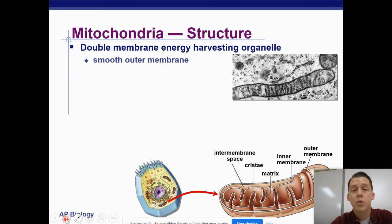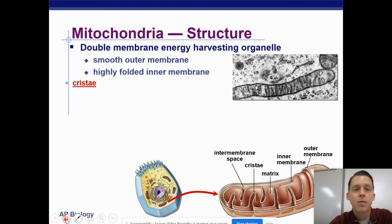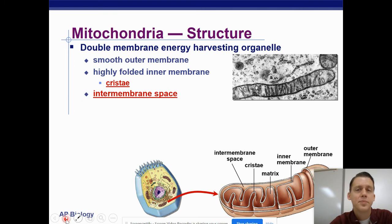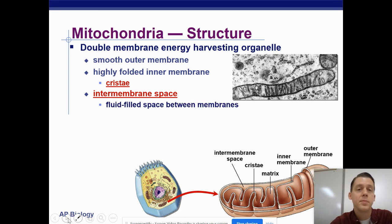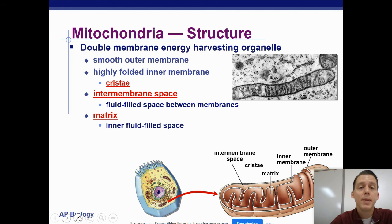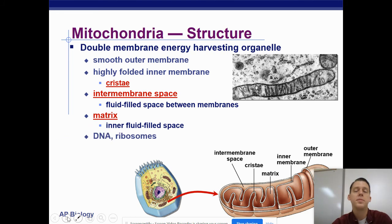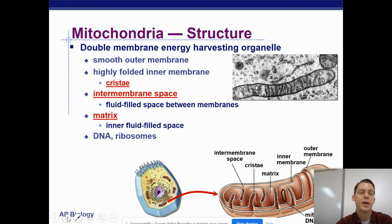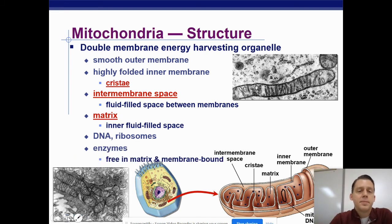The mitochondria has a double membrane. The outer membrane is very smooth and the inner membrane is highly folded, sometimes referred to as the cristae. There is the intermembrane space — that is the space between the membranes. There is the matrix, which is the middle; it kind of looks like a maze within the inner membrane. There's DNA and ribosomes found in a mitochondria, because it started off being its own bacteria.